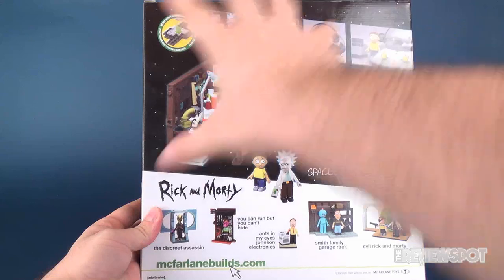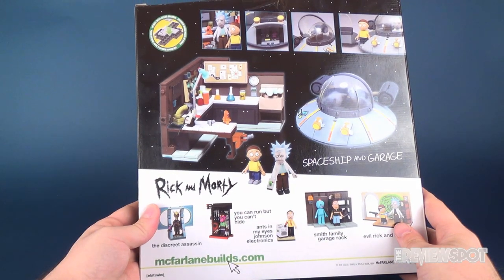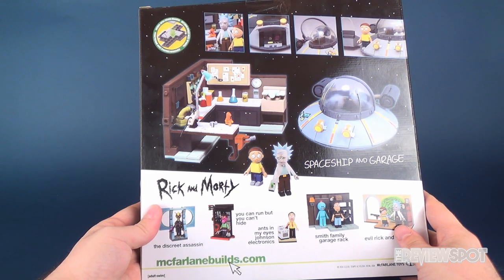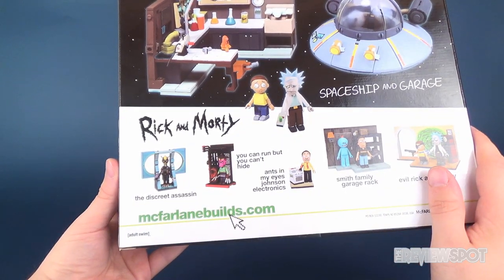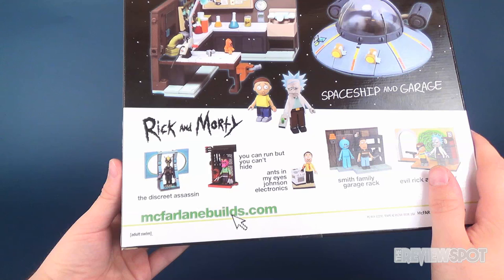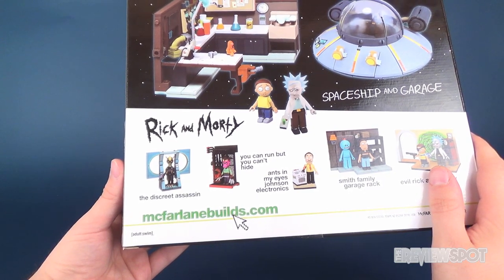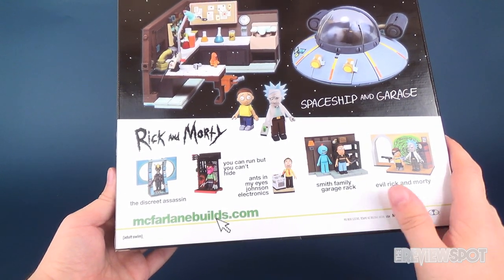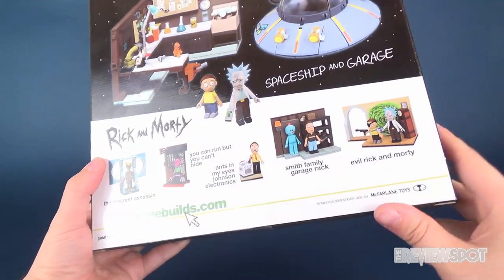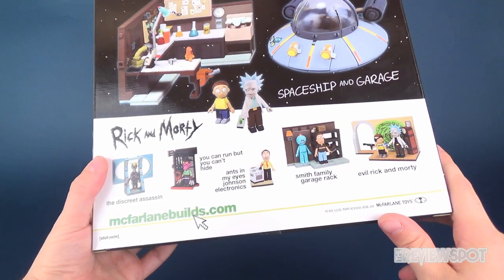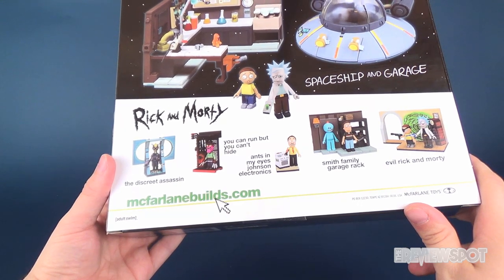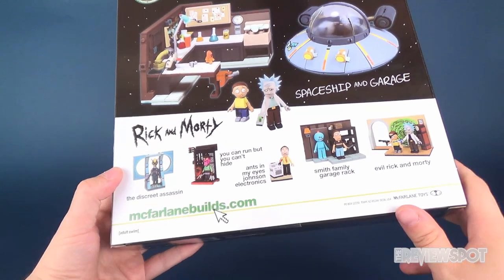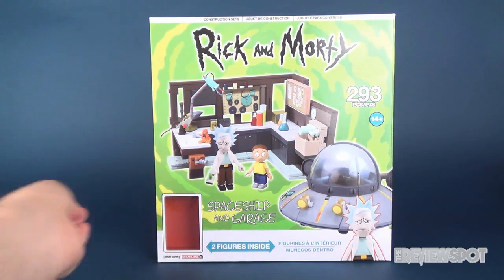This is basically what it's going to look like, and I thought initially I was going to build this on camera. I'm kind of glad that I didn't, it was very involved, got a little frustrated. We'll look at the finished piece in a second. Other sets to be built are the Discreet Assassin, which I have not picked up, along with the Ants in My Eyes Johnson Electronics. Still like to get those. We have however already looked at the You Can Run But You Can't Hide, the Smith Family Garage Rack, and just recently we also had a look at the Evil Rick and Morty set as well. To check out more you can head over to McFarlaneBuilds.com.